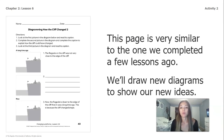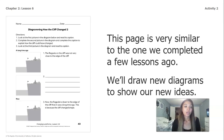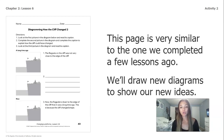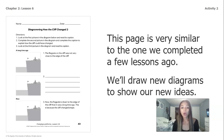This page is very similar to the one that we completed a few lessons ago and we're going to draw a new diagram to show our new ideas. We have the first part of our diagram — the flagpole on the cliff was not very close to the edge. Then somewhere in between a long time ago and now, something happened, and you're going to use what you've learned throughout this chapter to think about what changed in the middle. At number three, it says now the flagpole is closer to the edge of the cliff than it was a long time ago — this is because the cliff changed shape. In those blanks, you're going to think about what caused the cliff to change shape using what you know from our investigations, models, and readings.